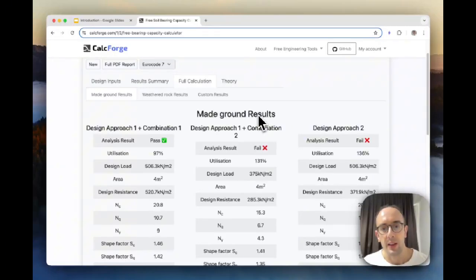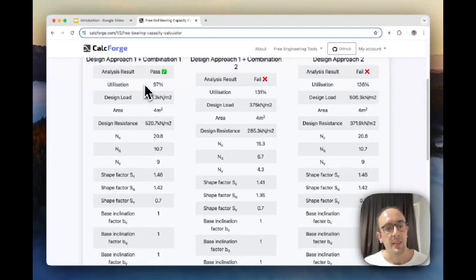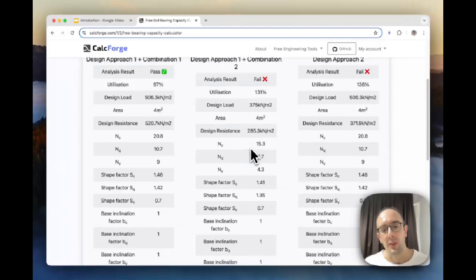I'll see a breakdown here of what the results are for that layer. So made ground basically runs through these different design approaches. So this is using Eurocode 7, so here it's running different design approaches and combinations which are given in the Eurocode 7. This is different combinations of factors of safety that applied onto the loads and also onto the soil strength parameters. And so for each one of these different cases, basically running this Terzaghi analysis, you'll see here these different things, NC, NQ. I'll explain a bit more about those, but basically these are different parameters that are given in Terzaghi analysis in terms of the shape of the foundation and different conditions related to the soil.